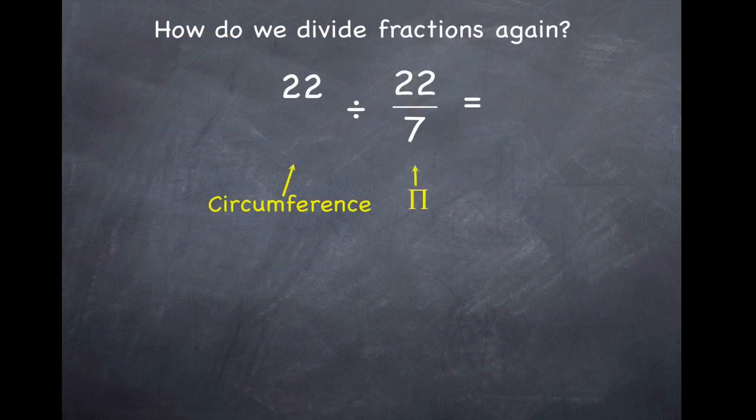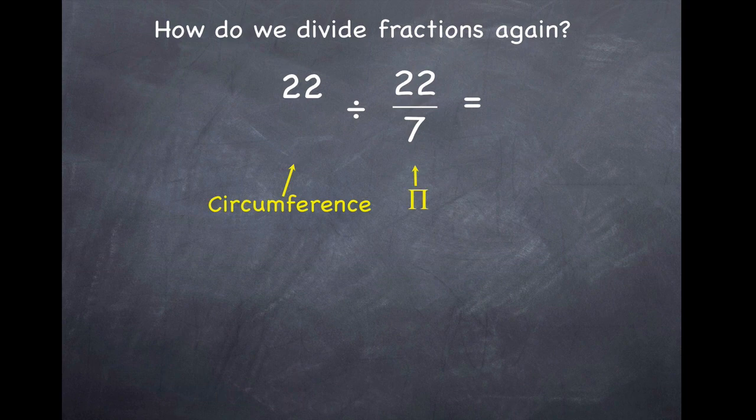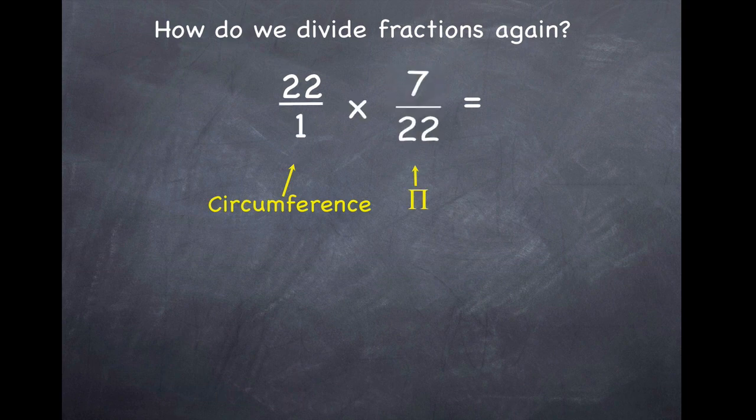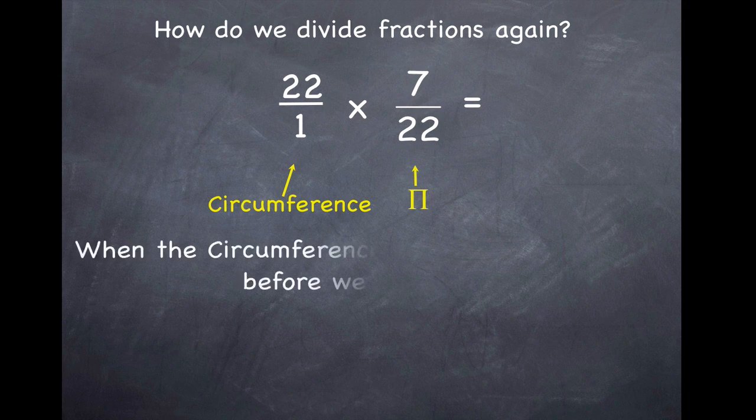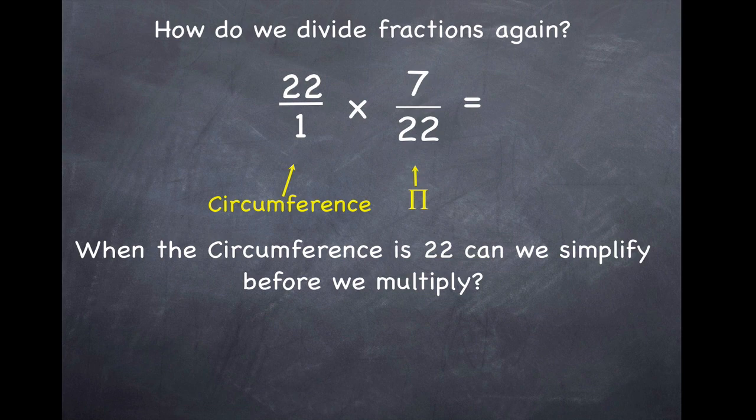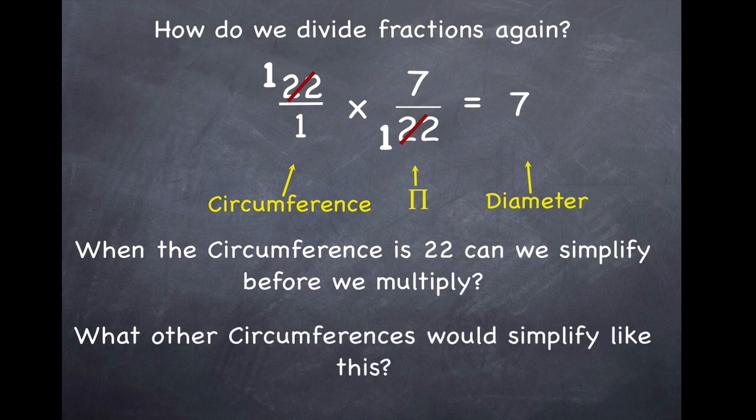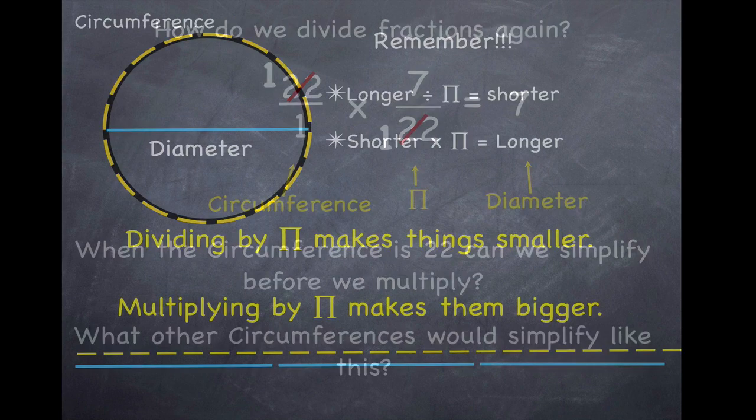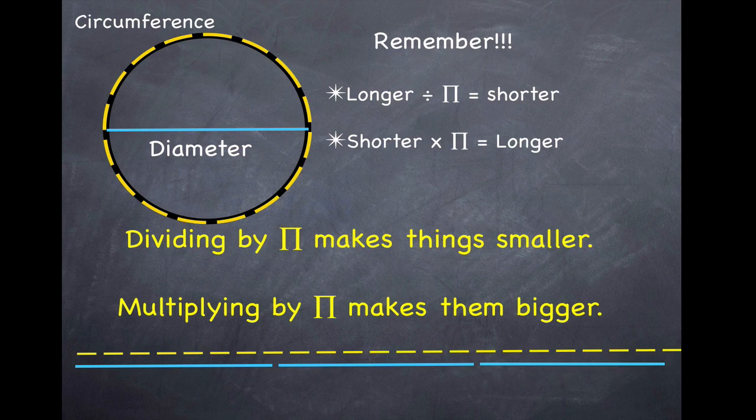Because remember, when we're dividing a circumference by 22 sevenths, we will be taking that other fraction and flipping it into its reciprocal. So now we can see we can cancel out the 22. So you want to be able to look out for multiples of 22 also: 22, 44, 66, 220, those sorts of things, so that we can simplify when we're multiplying. That's what we're doing to find the diameter. We're taking a circumference and dividing it by pi. We can always divide by 3.14, but sometimes it's easier to use fractions.